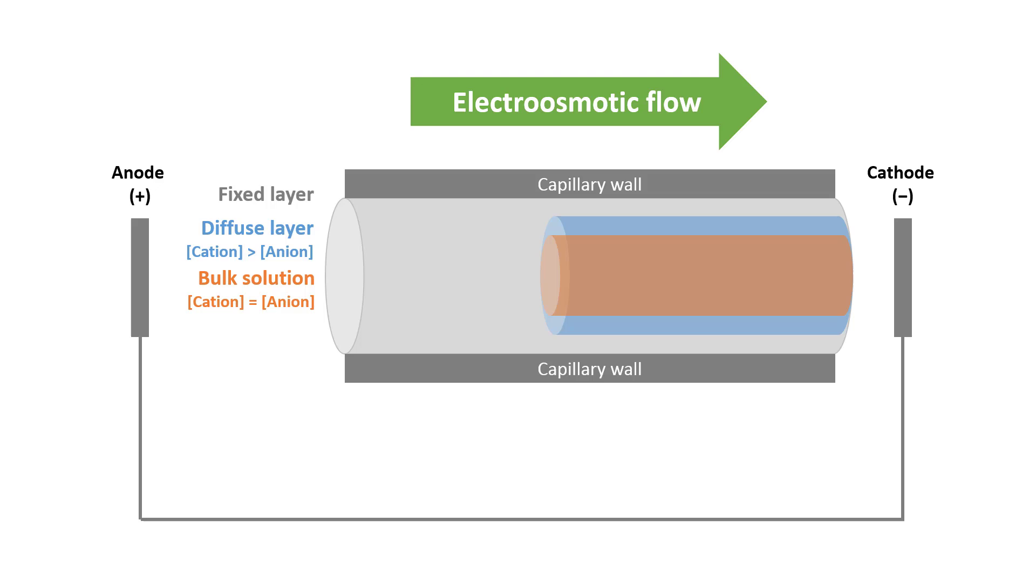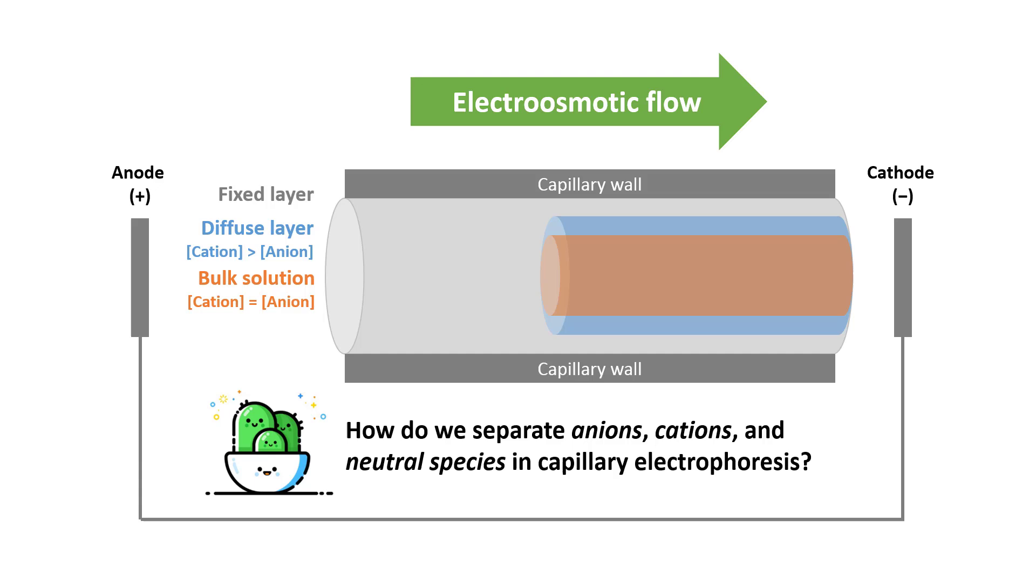So the next question we need to ask is, how do we separate anions, cations, and neutral species in capillary electrophoresis? We will be learning more about this in the next video when we talk about the electrophoretic mobility. So see you guys in the next video. Bye!